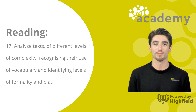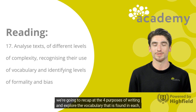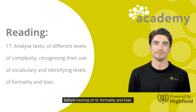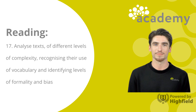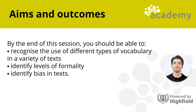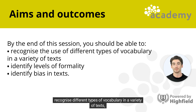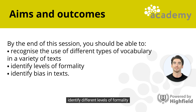First, we're going to recap the four purposes of writing and explore the vocabulary that is found in each, before moving on to formality and bias. At Level 2, by the end of this session, you should be able to recognize different types of vocabulary in a variety of texts, identify different levels of formality, and recognize bias in texts.